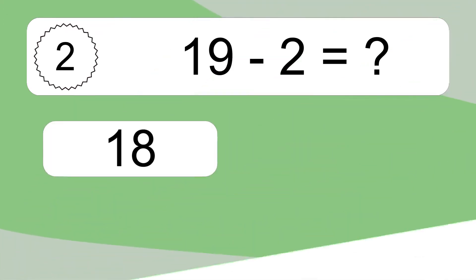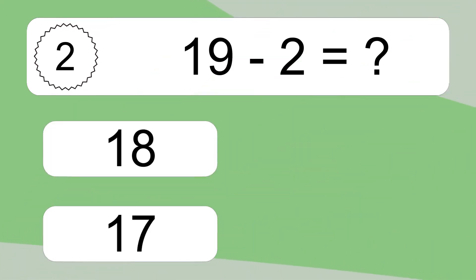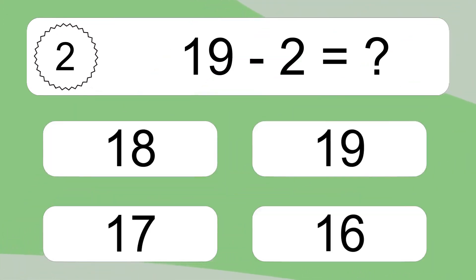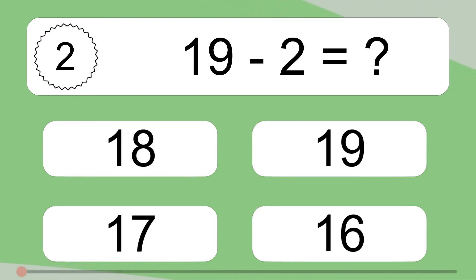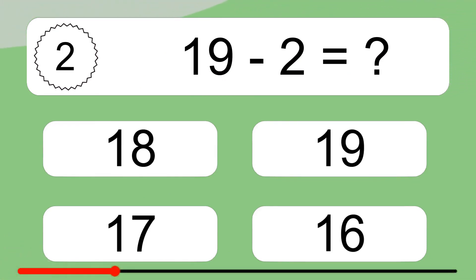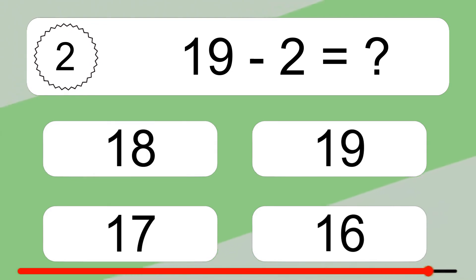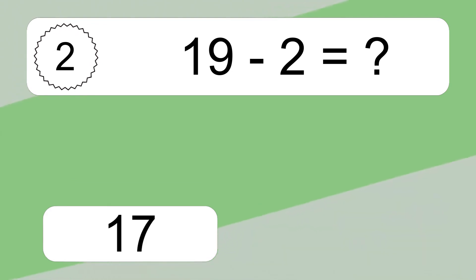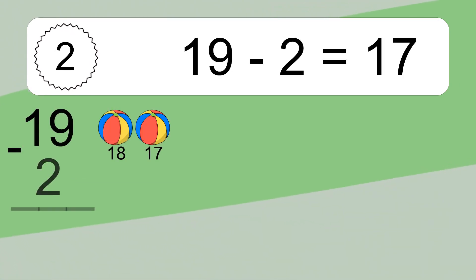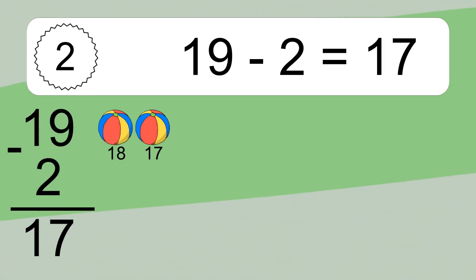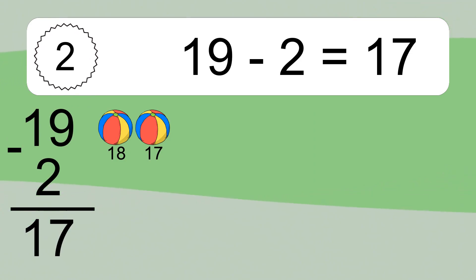19 minus 2 equals what? 19 minus 2 equals 17. Let's count it.